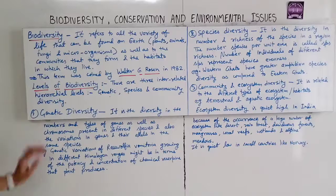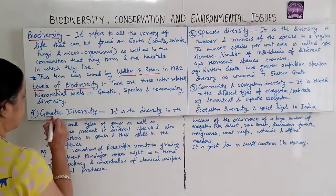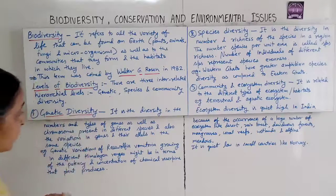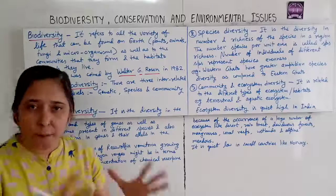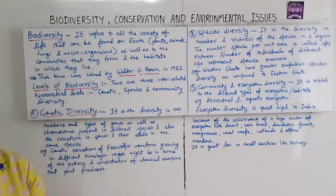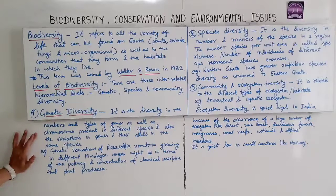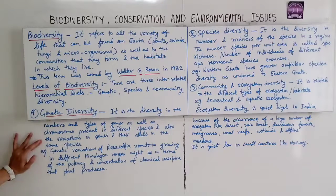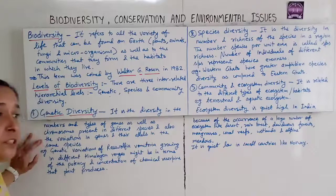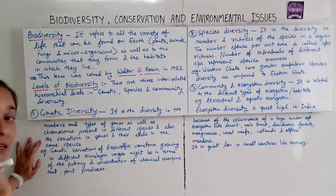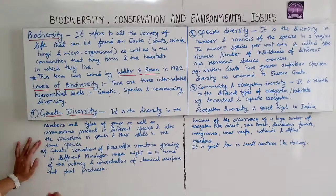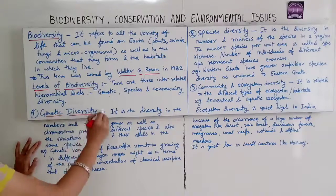The first level is genetic diversity. It is the diversity in the number and types of genes as well as chromosomes present in different species, and also the variations in genes and their alleles in the same species.